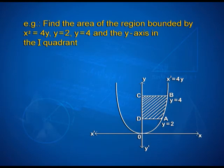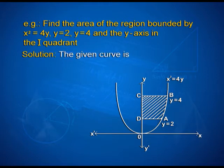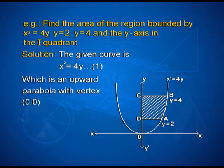Another example: find the area of the region bounded by x² = 4y, y = 2, y = 4, and the y-axis in the first quadrant. The given curve x² = 4y is an upward parabola with vertex at the origin (0, 0), and y = 2 and y = 4 are the lines. We are to find the shaded area ABCD.